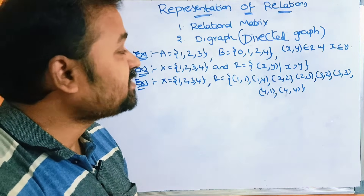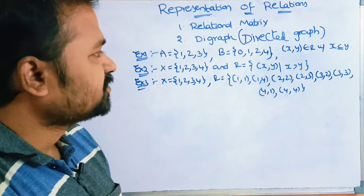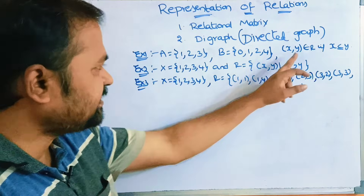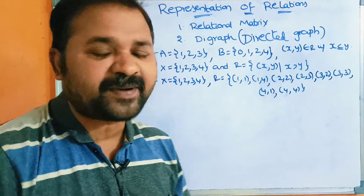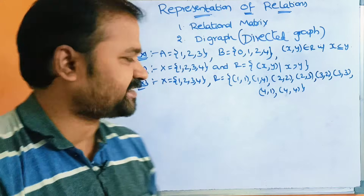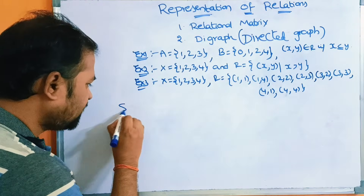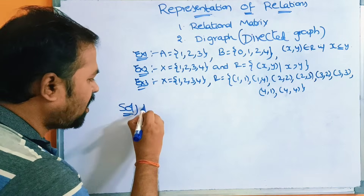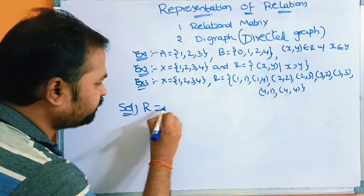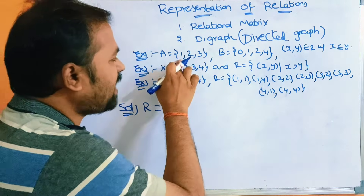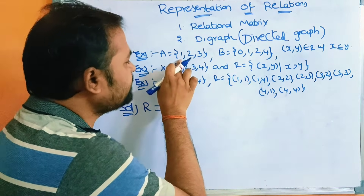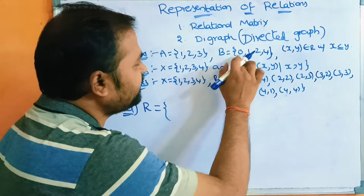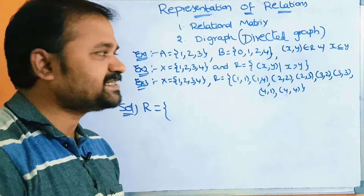The condition is X less than or equal to Y, where X is an element present in the first set and Y is an element present in the second set. To find R, we take the first element from the first set and combine it with all the elements in the second set.